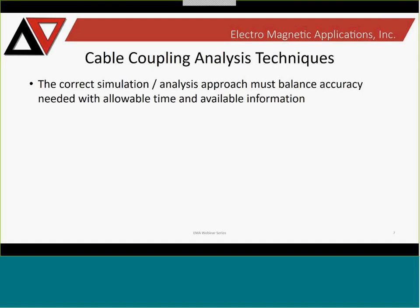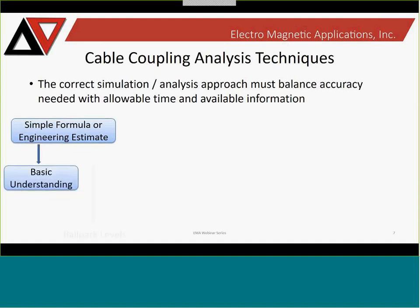When considering how to determine cable transients, there are several approaches. The approach depends on the amount of time you have, the accuracy you need, and the available information on your system. Initially, you can do simple formulas or engineering estimates — plug some parameters in and get a ballpark value. This provides a basic understanding of your problem or initial coupling transient levels.